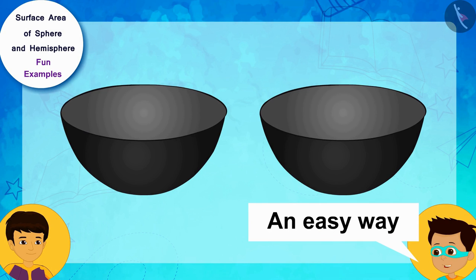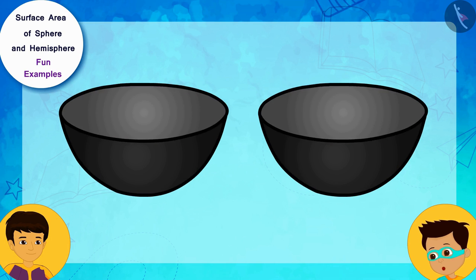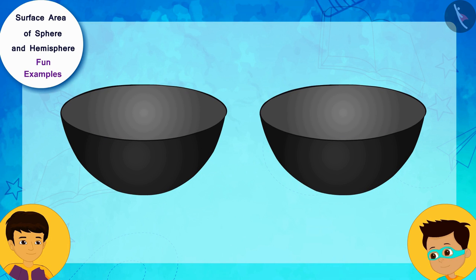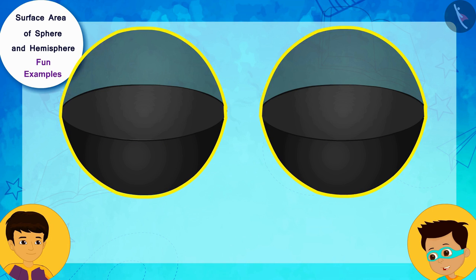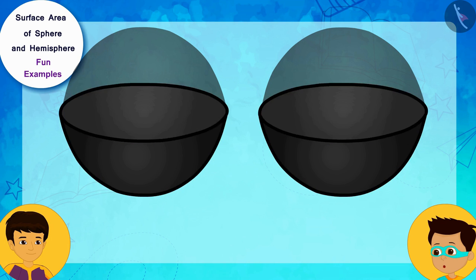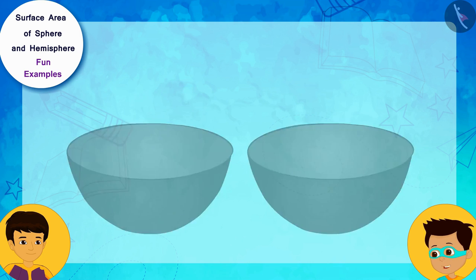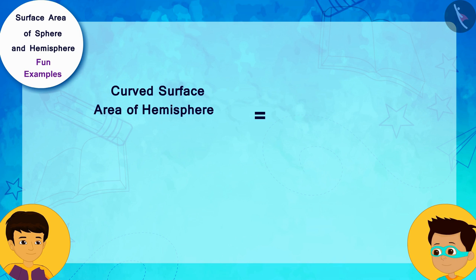Let me show you an easy way to remember this. These bowls are hemispheres. And, every hemisphere is half of a sphere. Therefore, the curved surface area of the hemisphere will be equal to half of the surface area of a sphere.